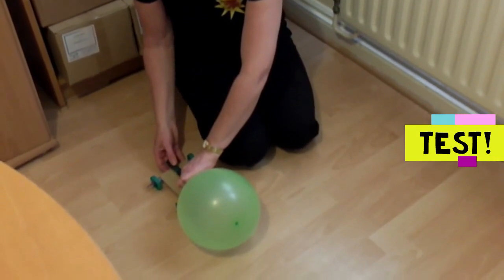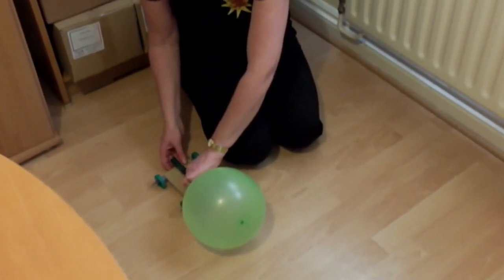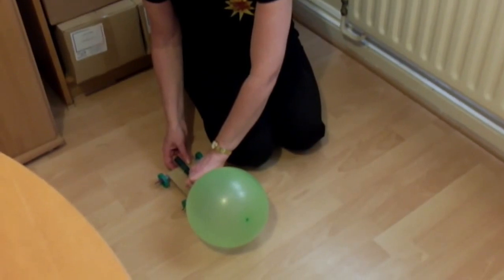Now you can try out the buggy. Blow up the balloon through the hose. Hold the neck of the balloon. Put the buggy on a smooth floor.